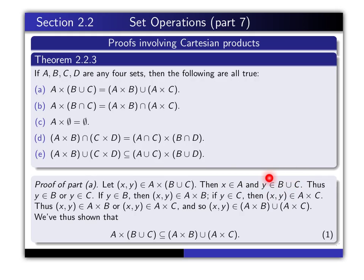Now what does it mean for Y to be in B union C? Thus, Y is either in B or Y is in C. And now I take two cases separately. If Y is in B, then X is in A and Y is in B, so that means the ordered pair is in A cross B. Then, if on the other hand Y is an element of C, now we've got X is in A and Y is in C, and therefore by definition the ordered pair X, Y is in A cross C.